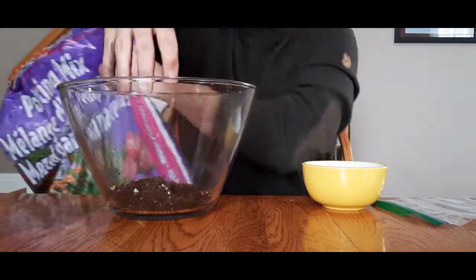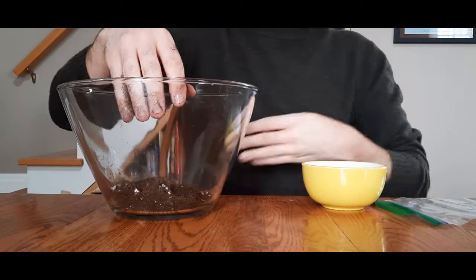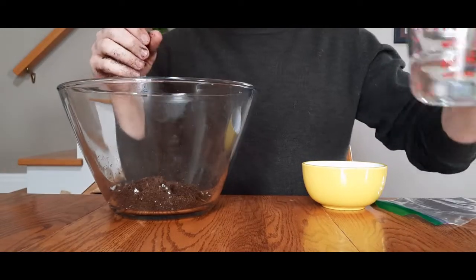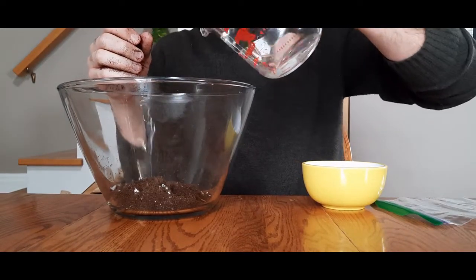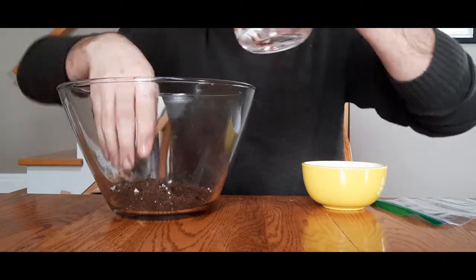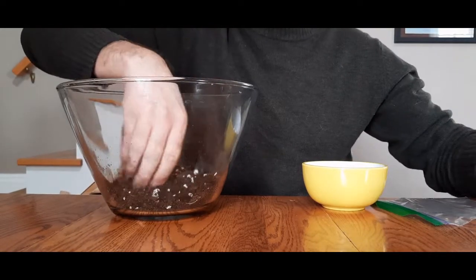You want to get it a little wet. It needs to be the consistency of a damp sponge, like one that's been wrung out, so it feels damp but it's not dripping. Add as much water as you need because you can always squeeze out the excess.